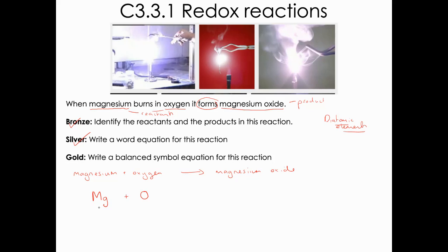Nitrogen always comes as N2, oxygen always comes as O2, hydrogen always comes as H2, and then all of group seven — bromine, chlorine, iodine, etc. — always come as twos. So oxygen has to come as O2.